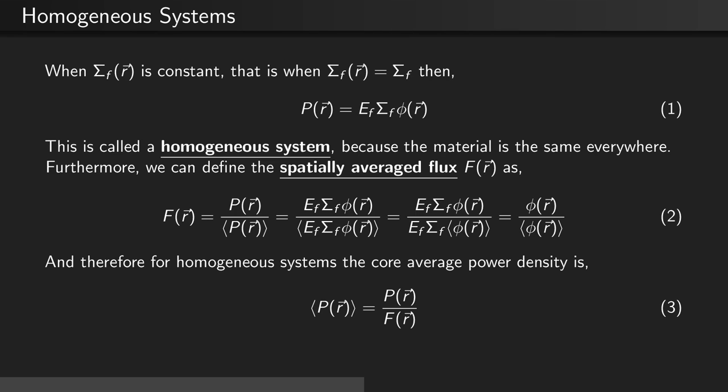Therefore, for homogeneous systems, the core average power density is equal to the power density divided by the spatially averaged flux, as we see in this equation.